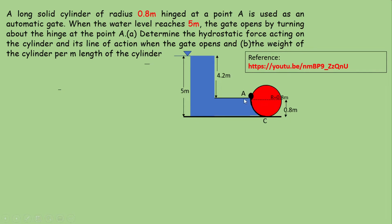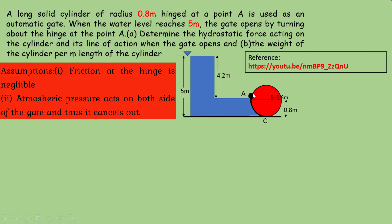We assume that friction at the hinge is negligible and atmosphere pressure acts on both sides of the gate, so it cancels out. We are interested in the hydrostatic force acting on curved surface AC. For plane surfaces immersed underwater, forces produced by fluid pressure on small elements are parallel. But for curved surfaces, these forces are not parallel and must be combined vectorially.